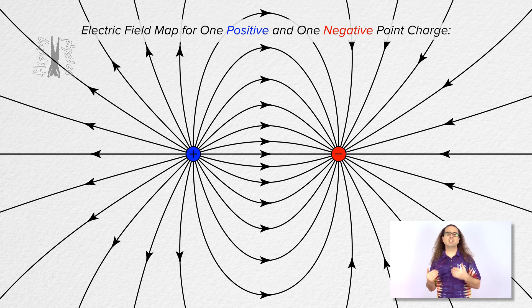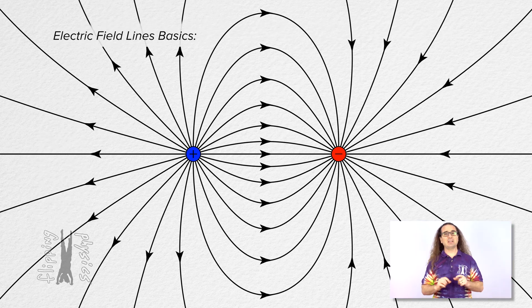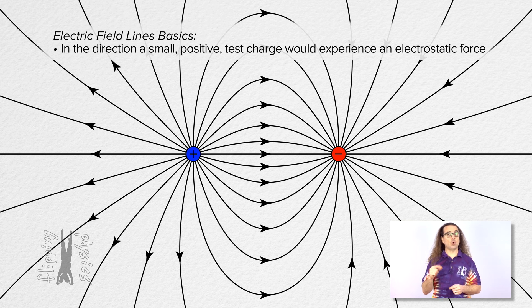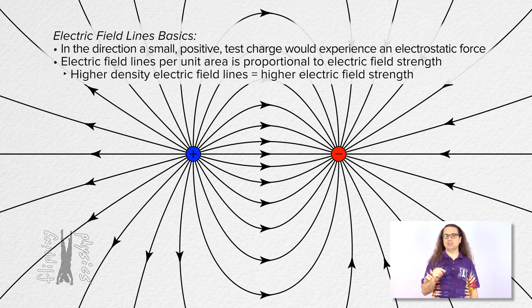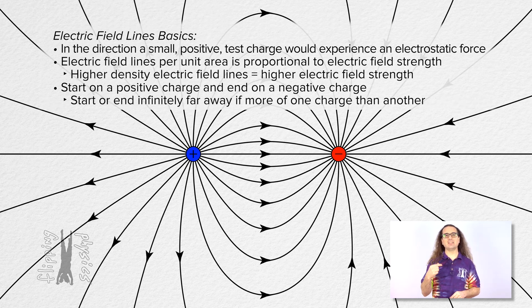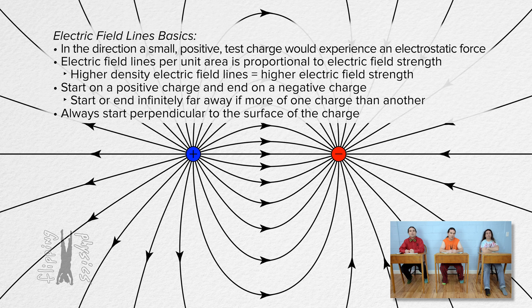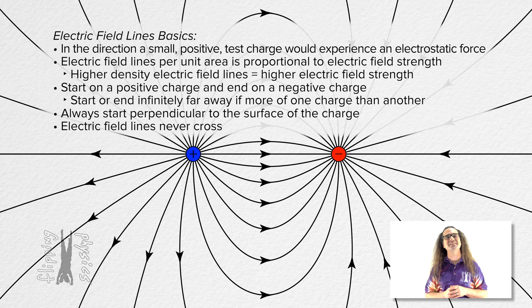Please realize electric field maps like this one are simplified models and are vector field maps which show the magnitude and direction of the electric field for an entire region. Electric field lines are always in the direction a small positive test charge would experience an electrostatic force. The number of electric field lines per unit area is proportional to electric field strength — a higher density of electric field lines means a higher electric field strength. Electric field lines always start on a positive charge and end on a negative charge, unless there is more of one charge than the other, in which case some lines end or start infinitely far away. Electric field lines always start perpendicular to the surface of the charged objects, and lastly, electric field lines will never cross. Thank you very much for learning with me today.